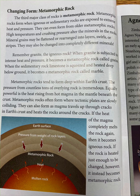When granite — the igneous rock — is subjected to intense heat and pressure, it becomes a metamorphic rock called gneiss. When the sedimentary rock limestone is squeezed and heated deep below ground, it becomes a metamorphic rock called marble. Metamorphic rocks tend to form deep within earth's crust, where the pressure from countless tons of overlying rock is tremendous.